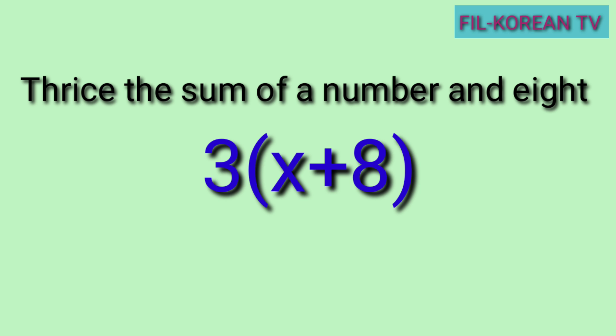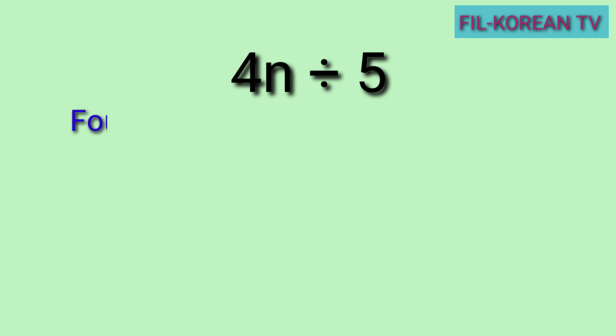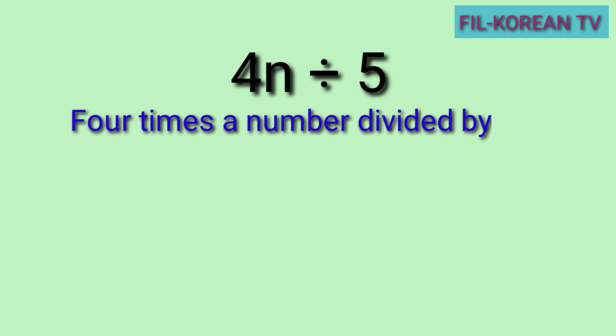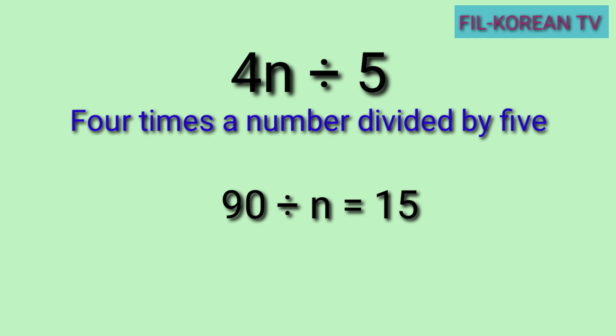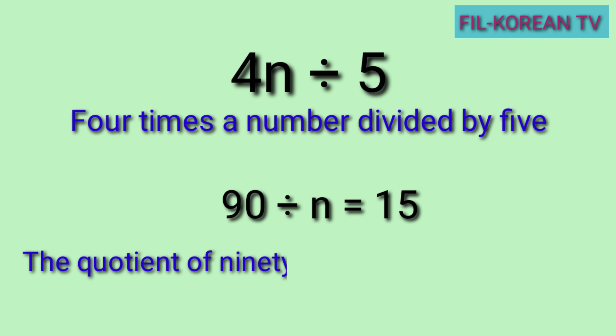Ngayon naman, i-translate natin itong algebraic expression na 4n ÷ 5 sa verbal phrase. Kung isusulat natin ito sa phrase, ito ay: four times a number divided by five. Last problem: 90 divided by n equals 15. I-translate natin ang equation na ito sa sentence: The quotient of 90 and a number is 15.